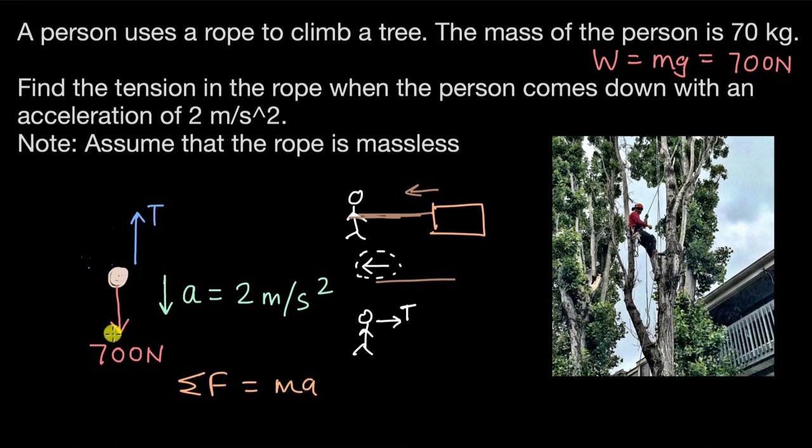So here the net force really is 700 minus T. And we are writing 700 minus T because the person is moving down. So that means this force 700, it must be more than T. So 700 minus T equals ma, which is 70 times 2.